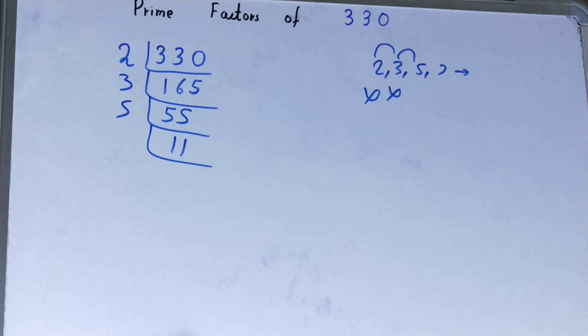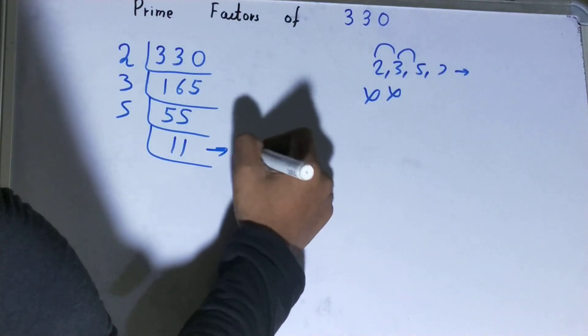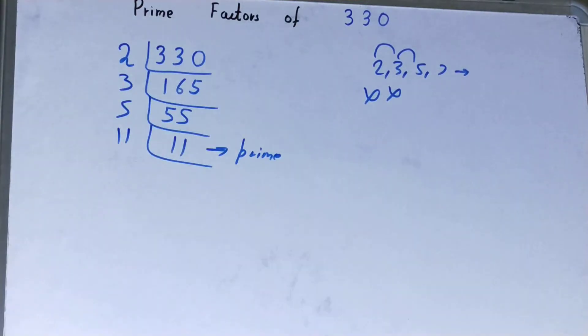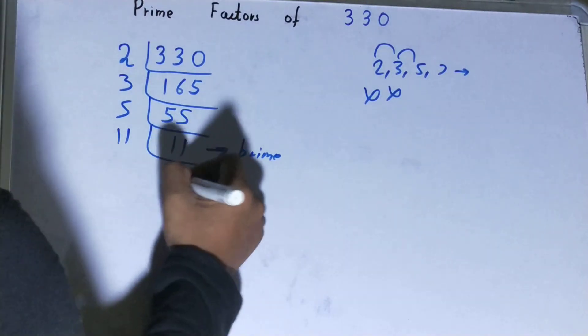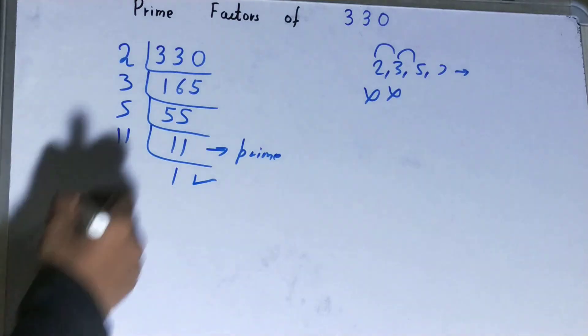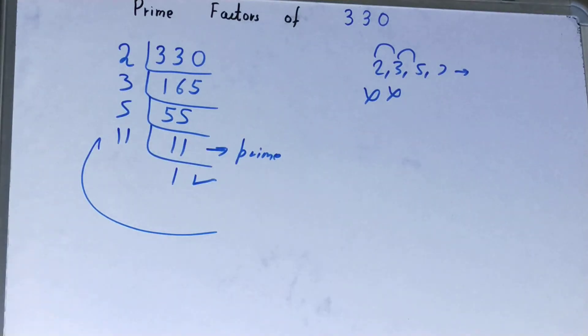On the left hand side, when you divide by 11, you will be left with 1. And when you are left with 1, the work is done. Whatever you have on the left hand side will be the set of prime factors for the number 330.